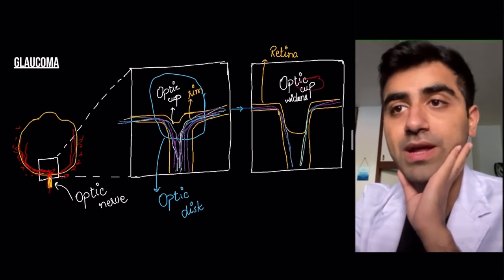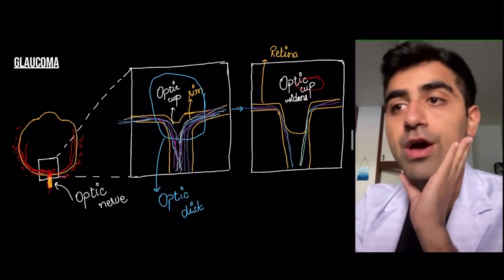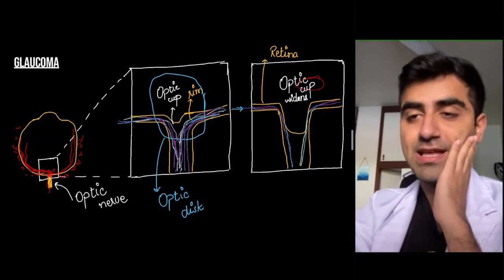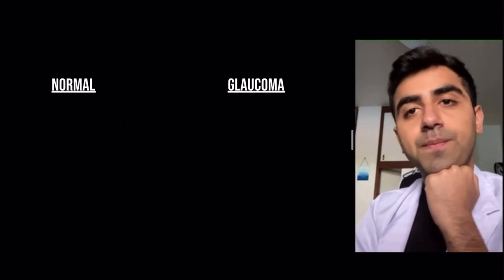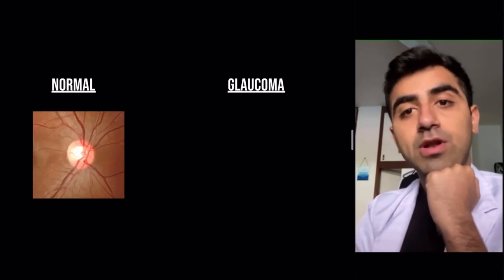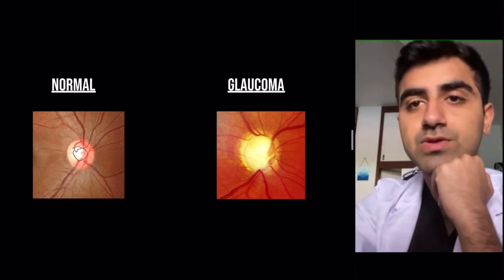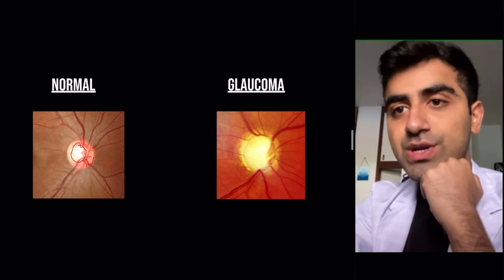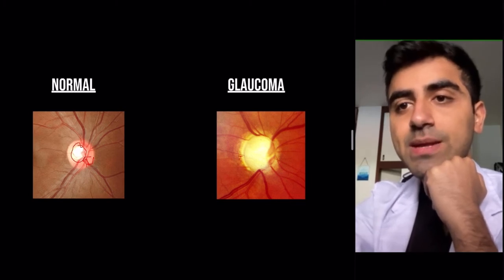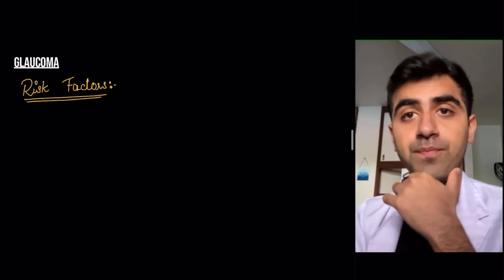The cup-to-disc ratio increases in glaucoma — the cup has been increasing in size. This is a normal optic disc versus a glaucomatous optic disc. In the glaucomatous disc, the rim is just a tiny part and almost all of it is cup — the cup is widening in glaucoma.